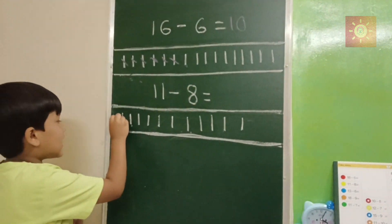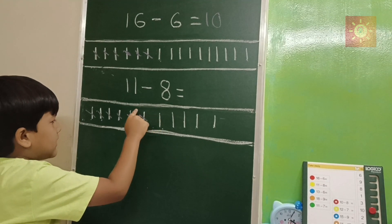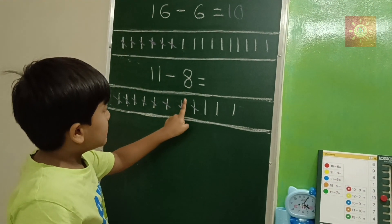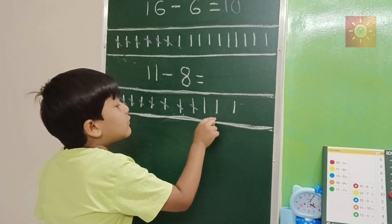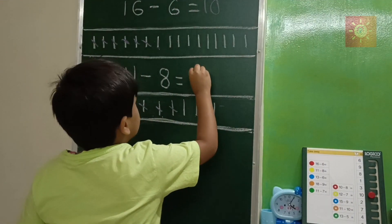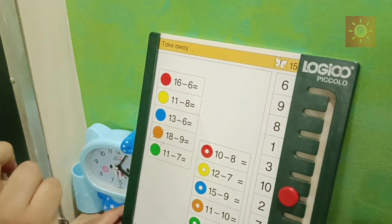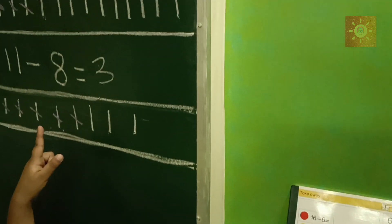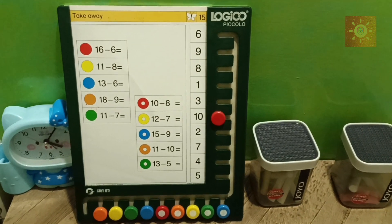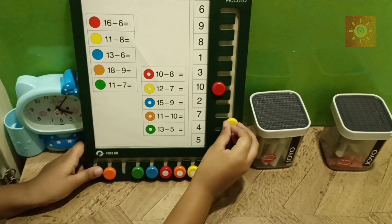I will cross them out one by one: one, two, three, four, five, six, seven, eight. Enough lines. Now we will count only the lines which are not covered - the white ones left: one, two, three. Three! Okay friends, look - which color is this? Tell me - it's yellow! And 11 minus 8 is three. Now we have to find our answer here. Friends, we are going to put the yellow one above the red one.